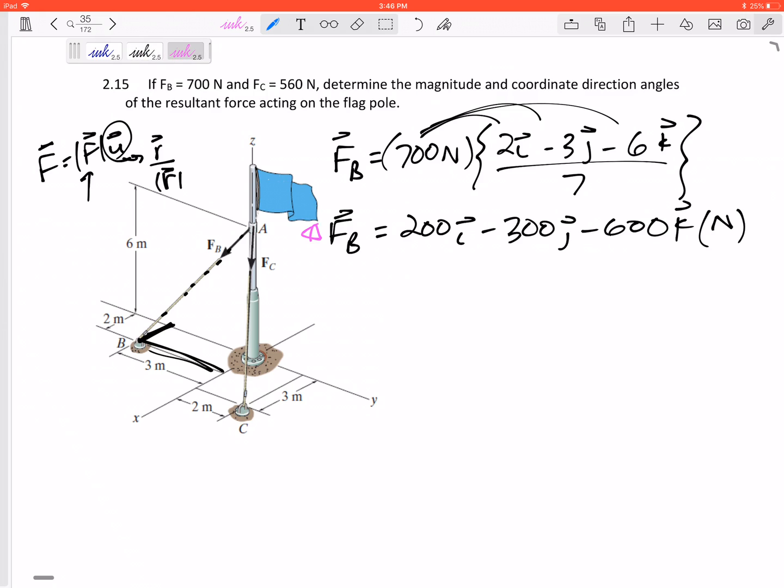Let me put a star by that and come back to that. Now it won't always come out so nicely. Why does it come out so nicely? Because the hypotenuse was 7 and the magnitude was 700.